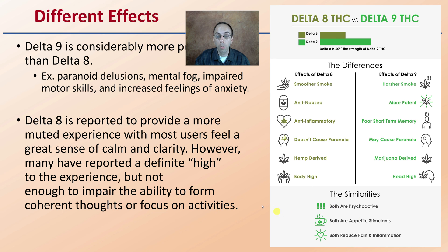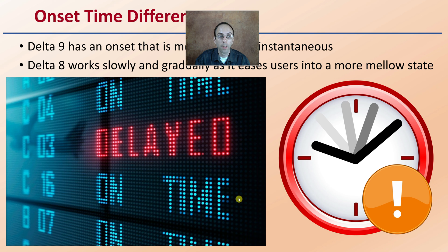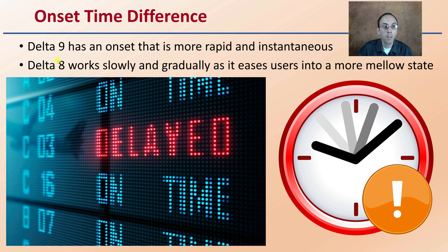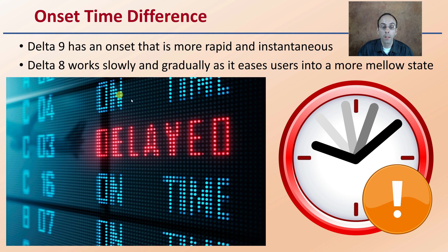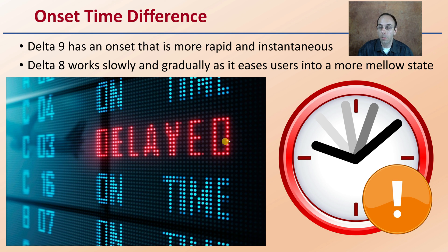There are also some similarities between the two. The onset time is different: Delta-9 has an onset that's more rapid and instantaneous, while Delta-8 works slowly and gradually, easing users to a more mellow state. Keep in mind that Delta-8 can have a more delayed effect.